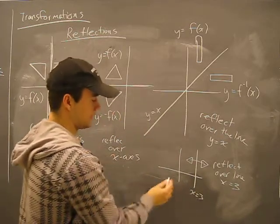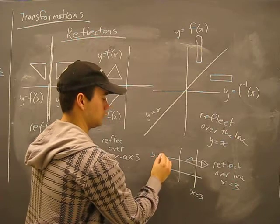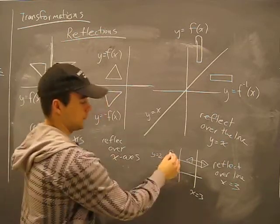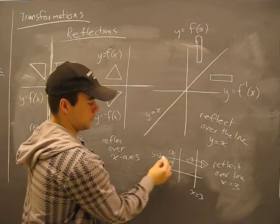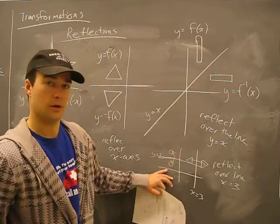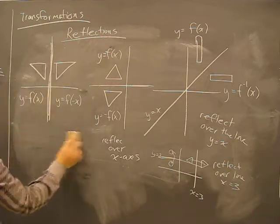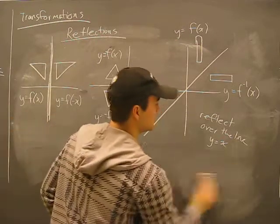Same as if you had a horizontal line like y equals 2 and you drew something like that. You're reflecting it over the line y equals 2. Okay, I'm erasing that. Hit rewind if you need it.